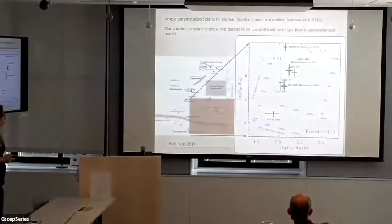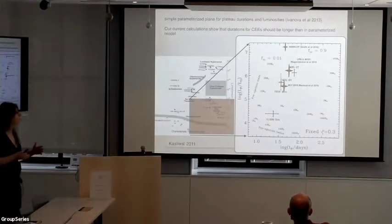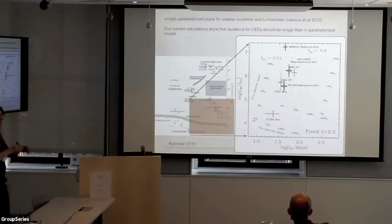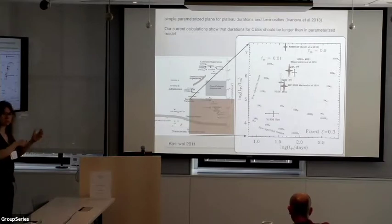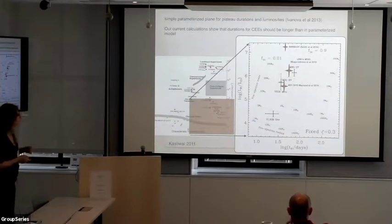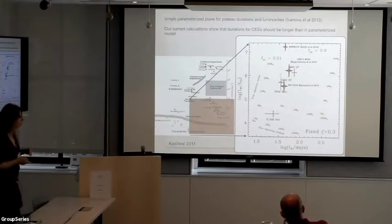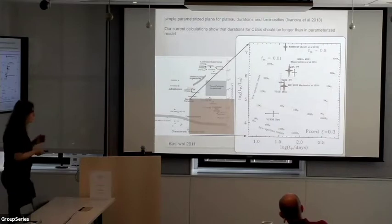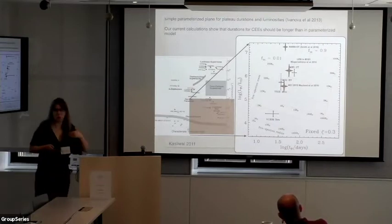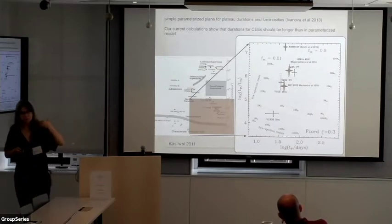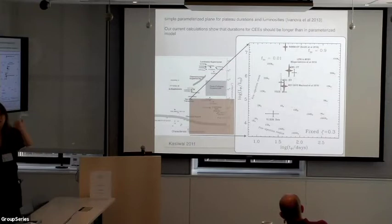It's kind of consistent, although from our current simulations, we know that the durations of common envelope events when you see them should be longer than predicted by the simple equation we derived many years ago. The temperatures probably will also be lower in luminosity. So we're trying now to go into simulations and get the light curves from our simulations.